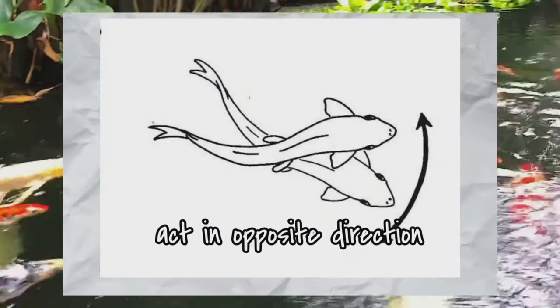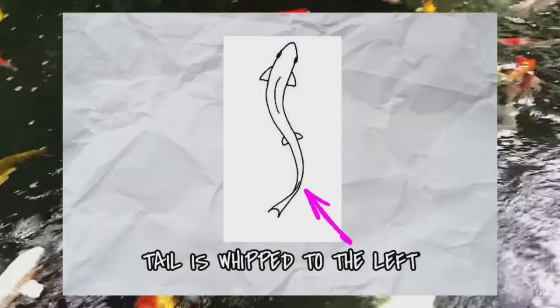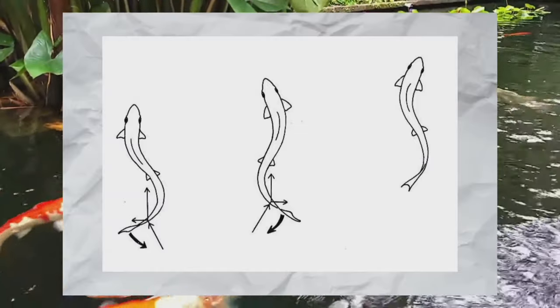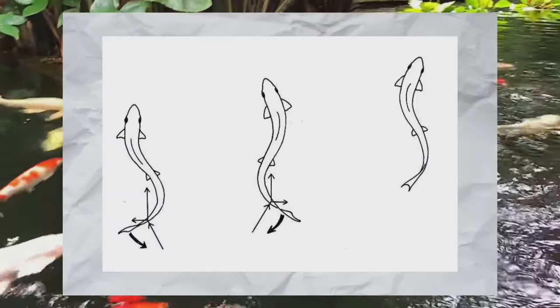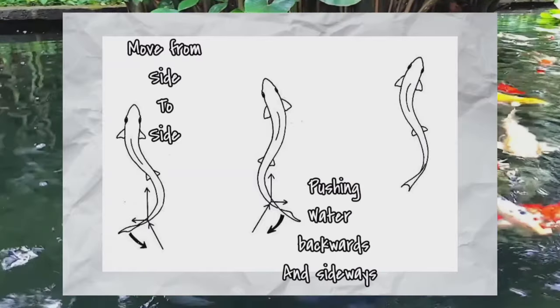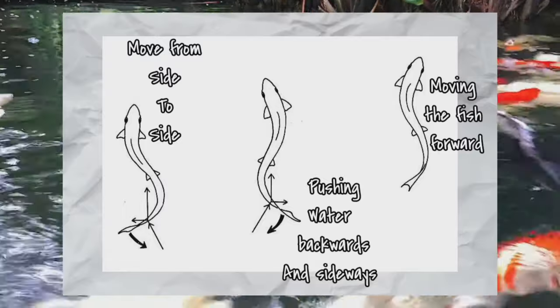As the myotome on the right contracts, the one on the left relaxes, causing the tail to move to the left. This causes parts of the body to move from side to side, pushing water backwards and sideways, and hence moving the fish forward.